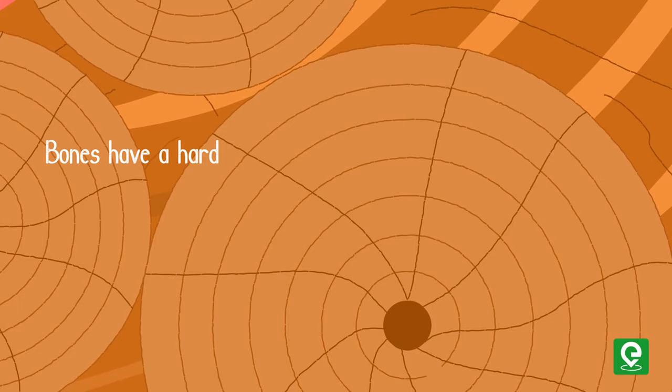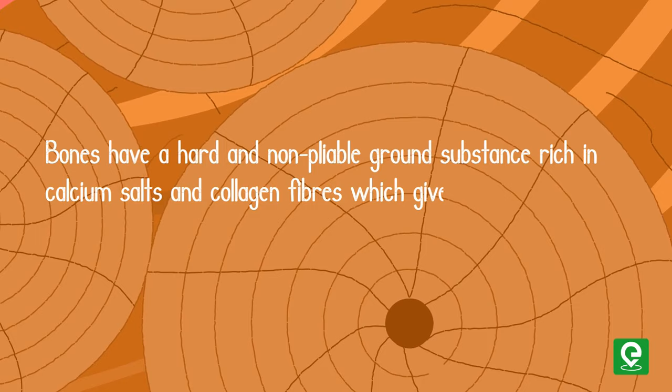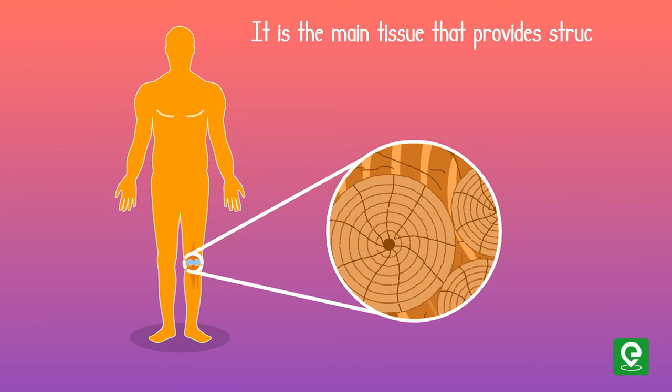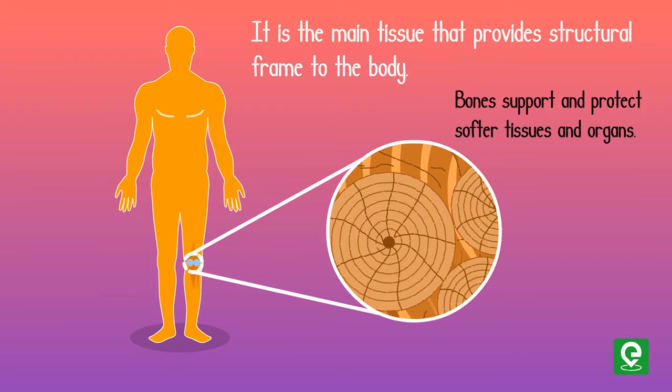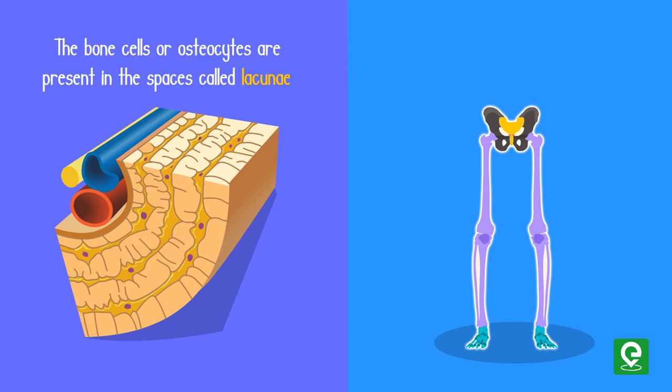Bones have a hard and non-pliable ground substance rich in calcium salts and collagen fibers, which give bone its strength. It is the main tissue that provides a structural frame to the body. Bone supports and protects softer tissues and organs. The bone cells, or osteocytes, are present in spaces called lacunae.